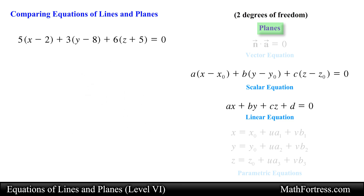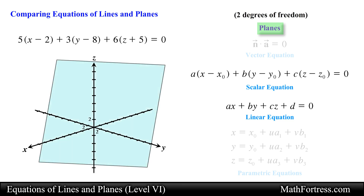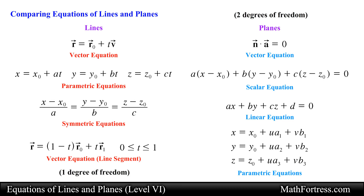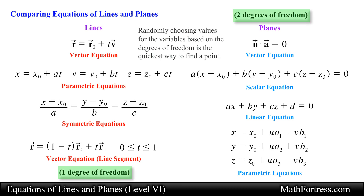If we visualize a plane in space, notice that there are various points on the plane with distinct x and y coordinates, but each combination of x and y coordinates has a unique value for the z coordinate. This method of randomly choosing values for the variables based on the degrees of freedom is the quickest way to find a point that is on the line or plane in space and will be very useful in solving particular types of problems.